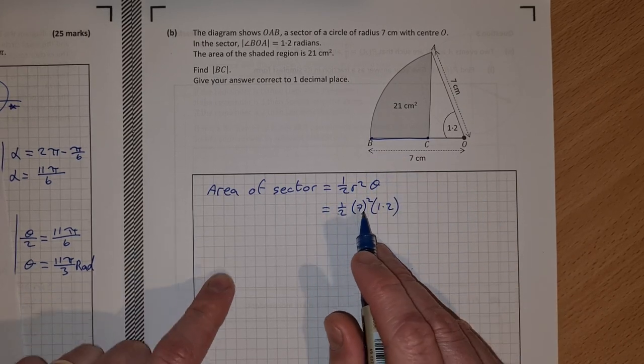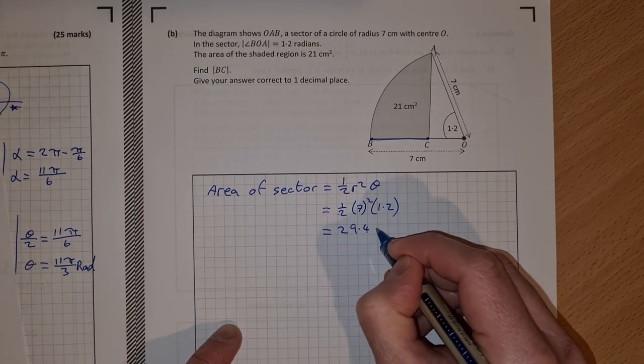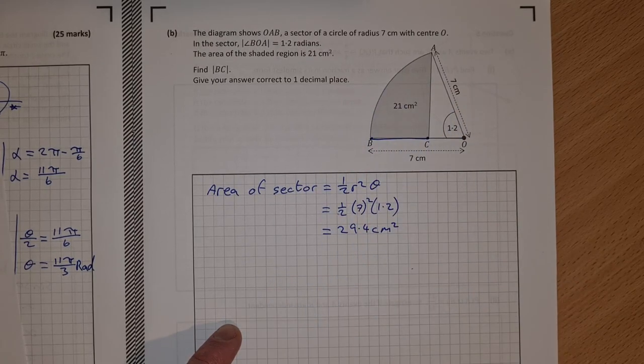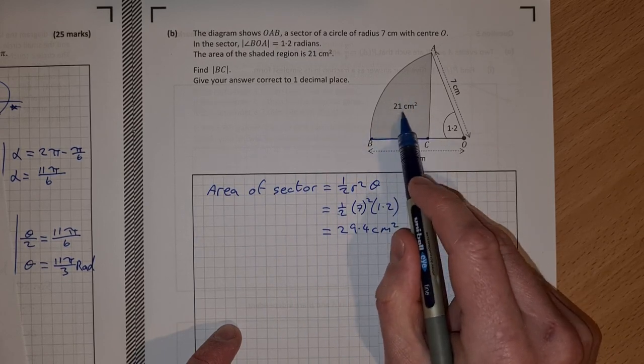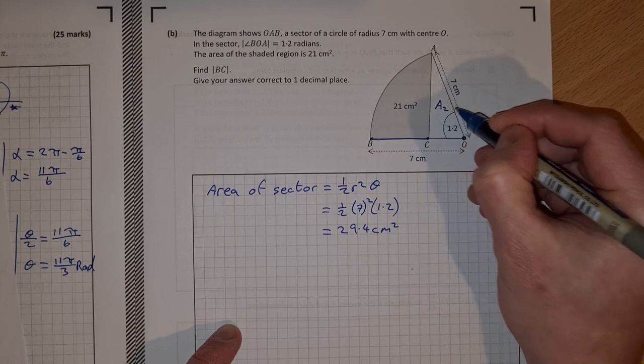So half by 7 squared by 1.2 works out to be 29.4 square centimetres. So that's the total area of this sector. Now, if this shaded region is 21, let's call this region here A2.